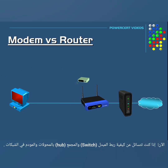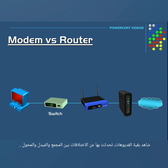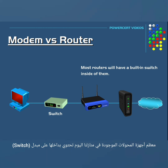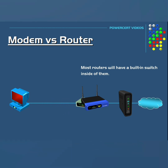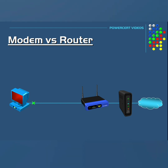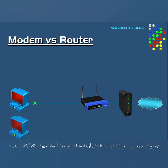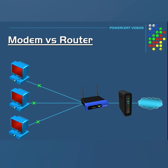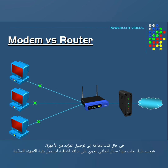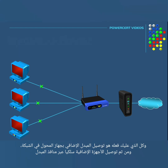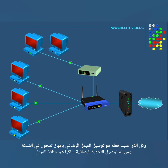Now if you're wondering how hubs and switches relate to routers and modems — especially if you saw my other video where I explained the differences between hubs, switches, and routers — keep in mind that most routers will have a built-in switch inside of them. So there's no need to have a switch if you already have a router that has one built in. A router like this may have a four-port integrated switch so that you can connect four ethernet cables for your wired devices. The only time you may need to add a switch is if you needed more wired connections, and you can just connect a switch to your router and add more connections to the switch.